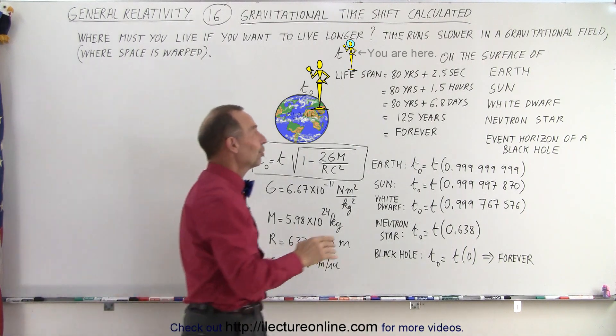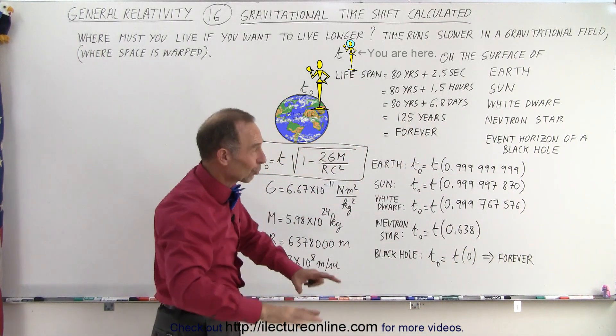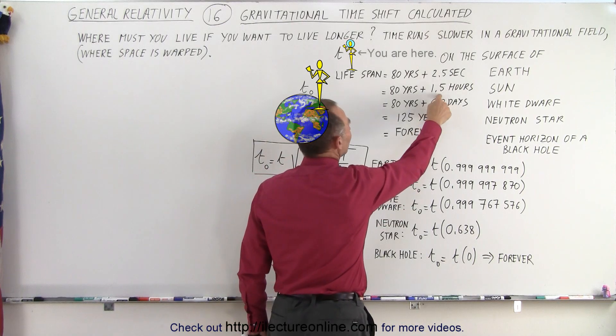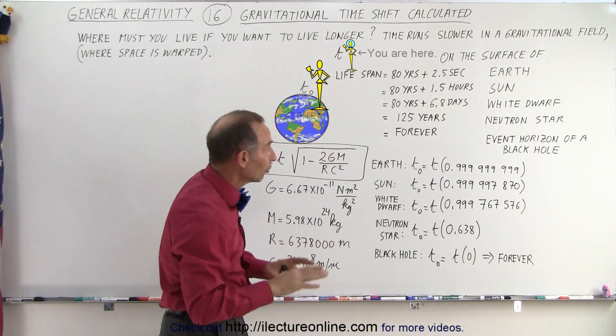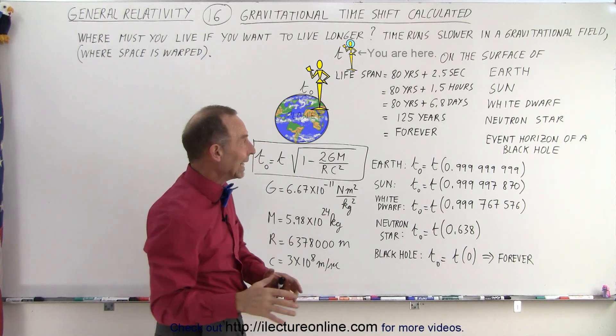If you could somehow go to the surface of the Sun and have, of course, protection against the heat and the turbulence of the surface of the Sun, you can live for an additional one and a half hours under the gravitational influence of the Sun, because time runs slower on the surface of the Sun relative to space, by one and a half hours for an 80-year span.